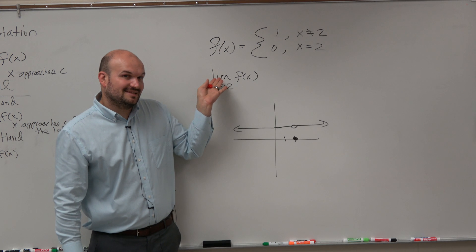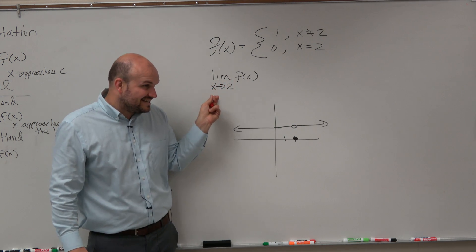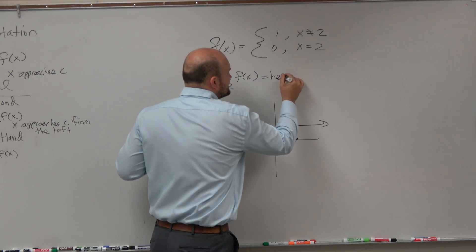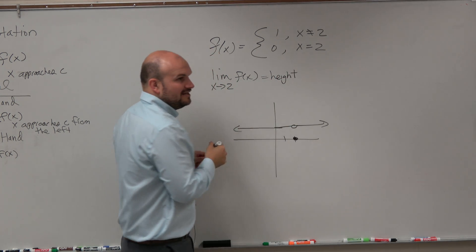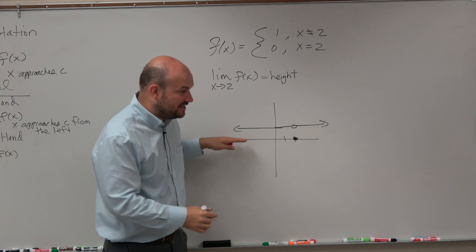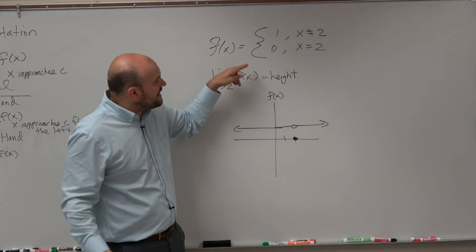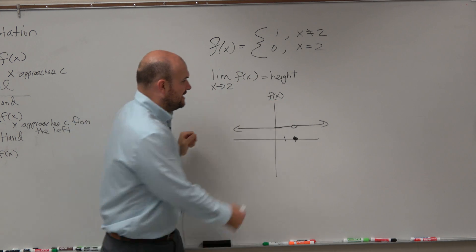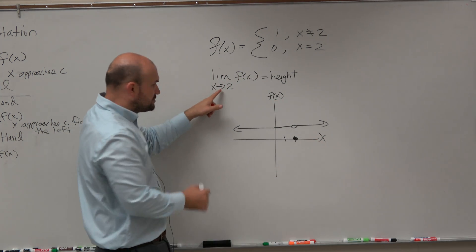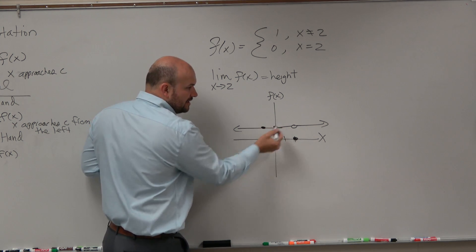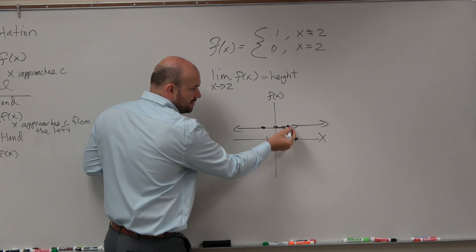Remember, it's limit as x is approaching 2. What we're looking for, we're looking for the height. Okay? The x values goes along here. This is the f of x values. What value of f of x are we approaching as x gets closer and closer to 2? So here, x is negative 1. Here, x is 0. Here, x is 1. Here, x is 1.5.